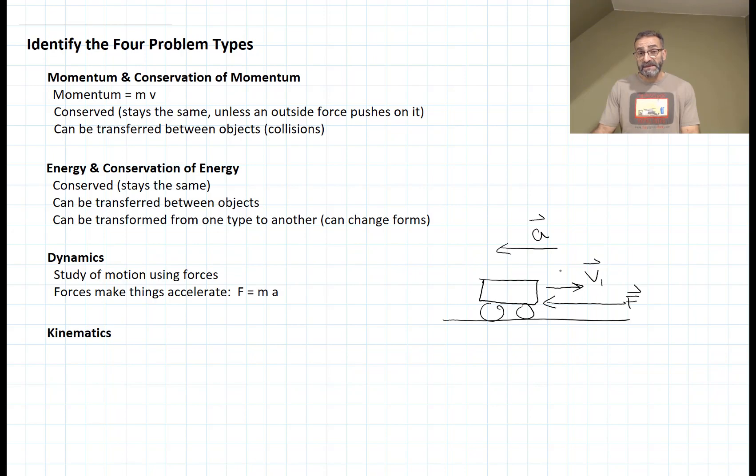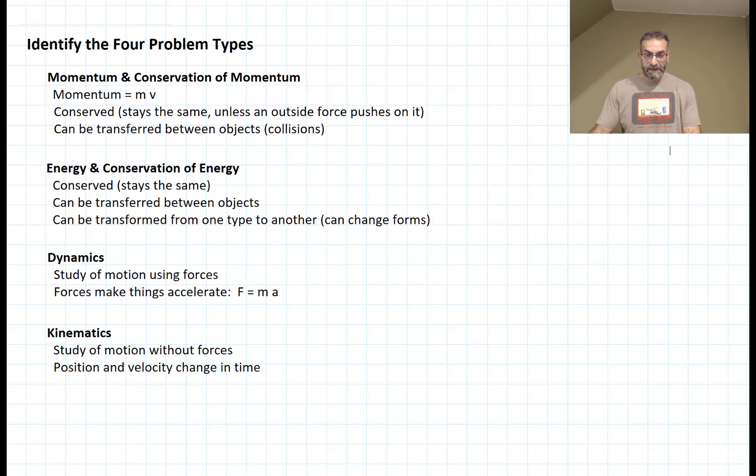And kinematics uses position, velocity, and rates of change - basically math - to tell us where our objects are. Let's take a look at this example. Let's define this as being x equals 0.